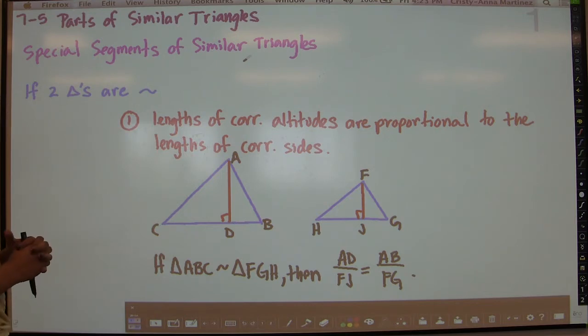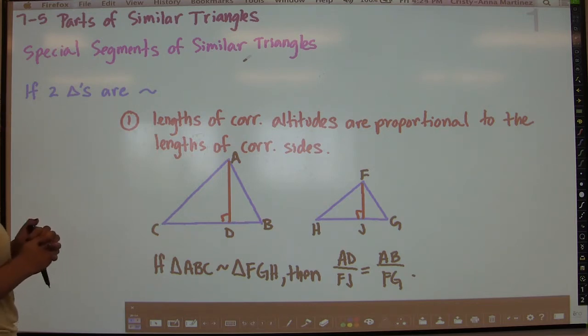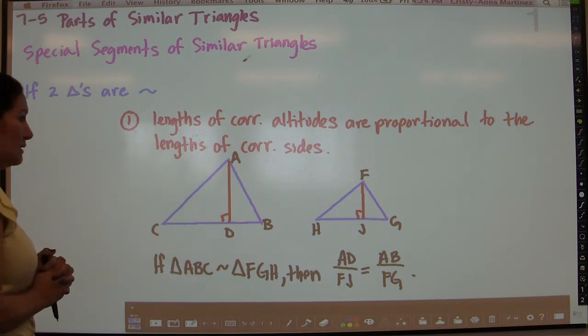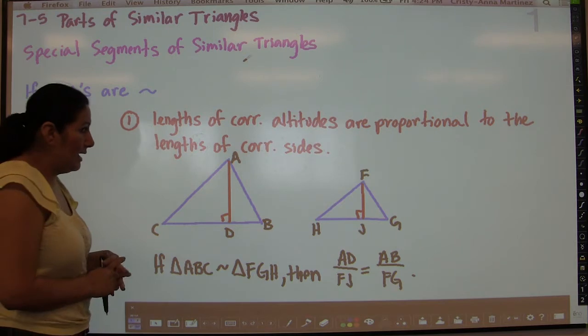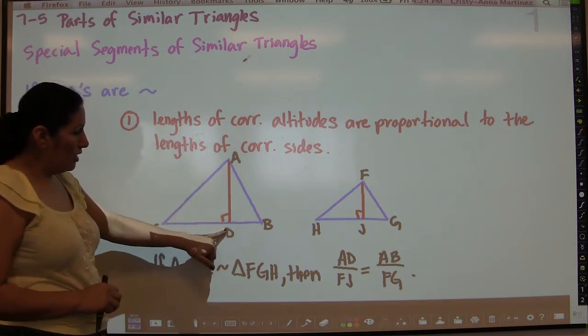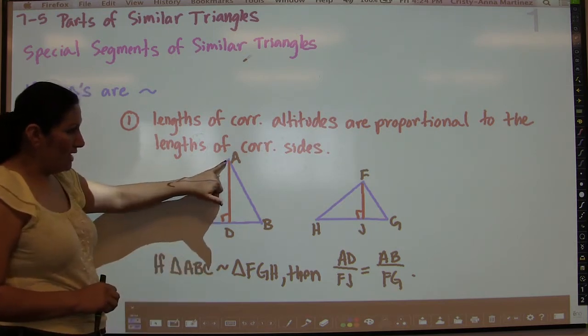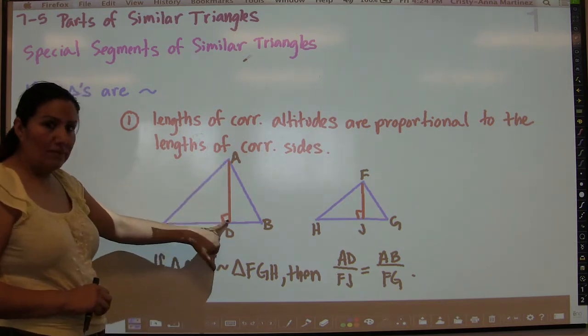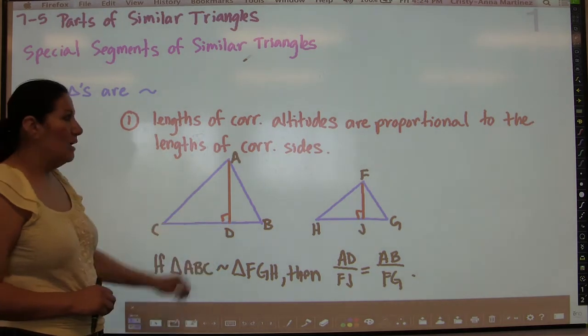Hopefully you still remember what an altitude is. An altitude is basically the segment that is perpendicular — it goes from a vertex of the triangle perpendicular to the opposite side.